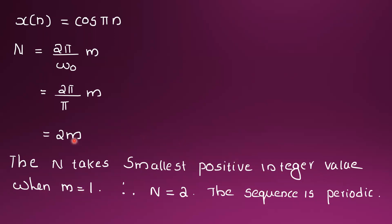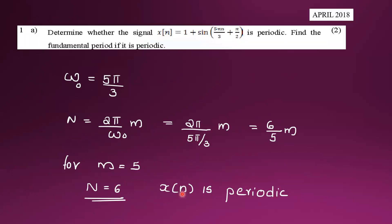The sequence is periodic if N = 2πm / ω₀ is an integer. For example, if ω₀ = 5/3, then N = 2πm / (5/3) = 6πm/5. Checking values of m: for m = 5, N = 6, which is an integer. Therefore x(n) is periodic with period N = 6.